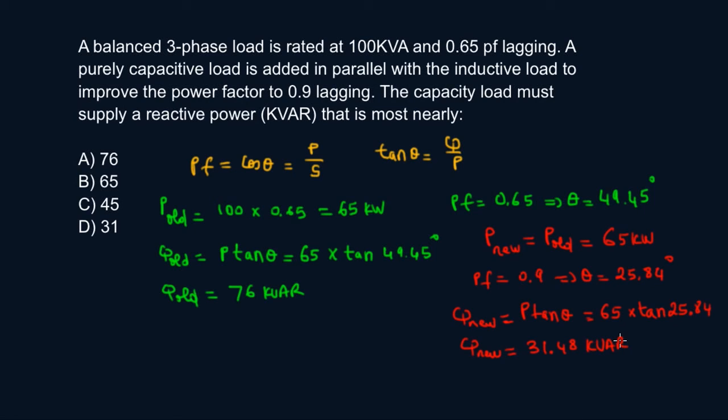So after I added my capacitor, capacitors, they reduce the total reactive power. So after I added the capacitor, my new reactive power total for the entire system becomes 31.48. So I went from a 76 to a 31.48. So how much is the capacitor actually contributing to it? So of course you do the difference between those two. So the reactive power from the capacitor would be 76 minus 31.48. So this is 44.5.